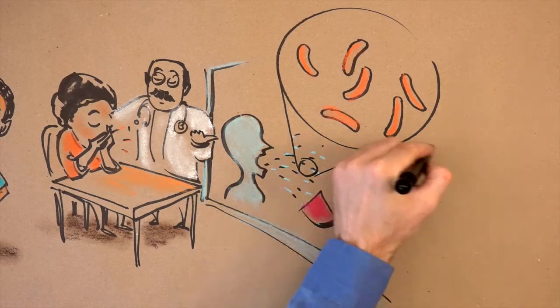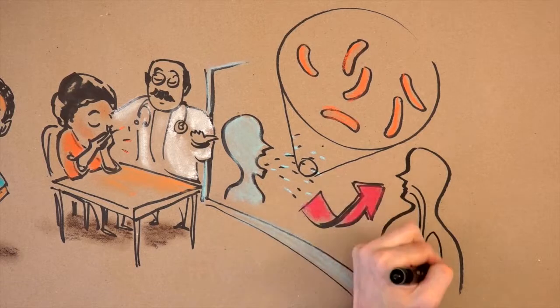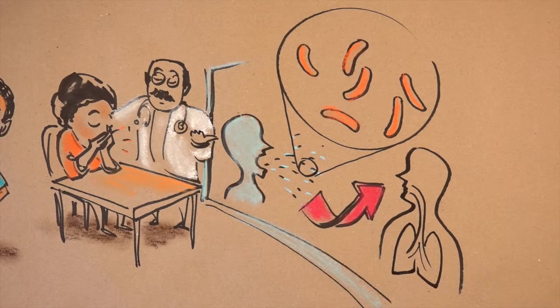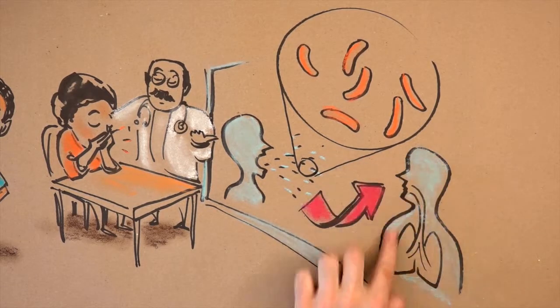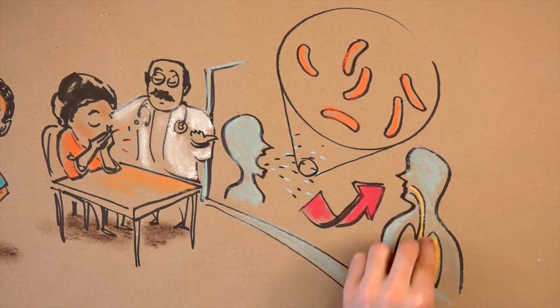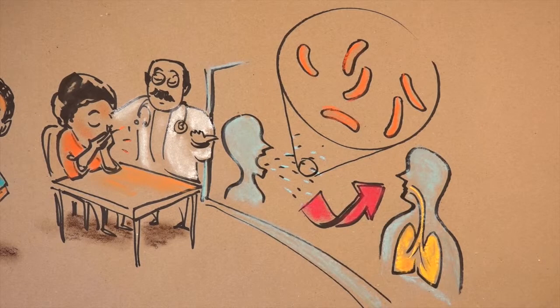TB bacteria is only transmitted through the air, not on surfaces like spoons, cups and tables. If we breathe in bacteria, it goes into our lungs.